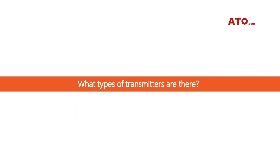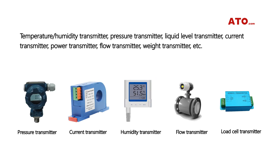What types of transmitters are there? There are some common transmitters which are used widely, such as temperature transmitters, humidity transmitters, pressure transmitters, liquid level transmitters, current transmitters, and weighing transmitters, etc. These transmitters are used in every part of industrial automation equipment.